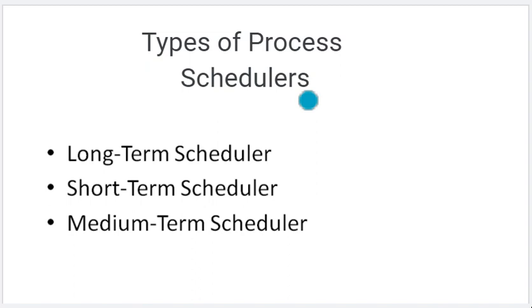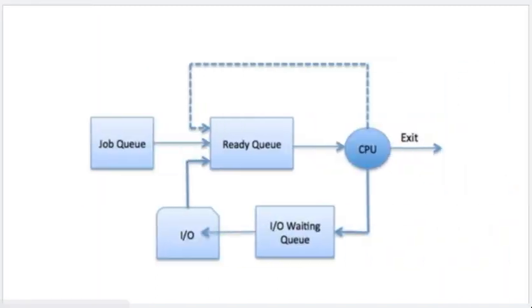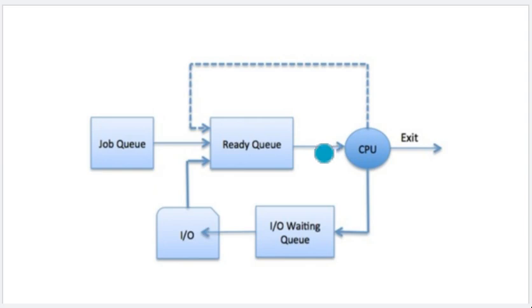How do we manage these things? They are the schedulers. What are the schedulers? Long-term, short-term, and medium-term. Long-term schedulers work between the job queue and the ready queue — they move processes from the job queue to the ready queue. Short-term schedulers work between the ready queue and the CPU — they move processes from the ready queue to the CPU. Medium-term schedulers work between the waiting queue and the ready queue.